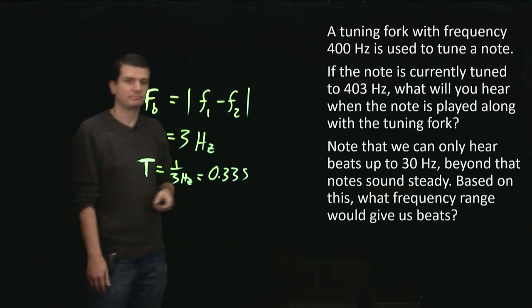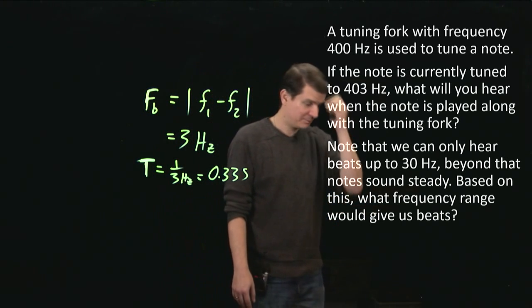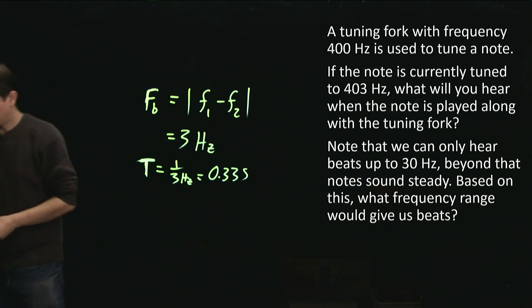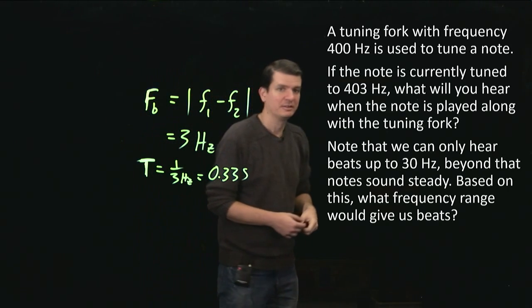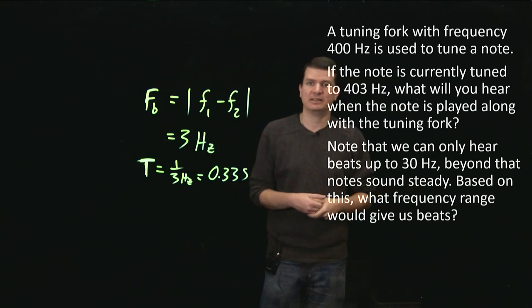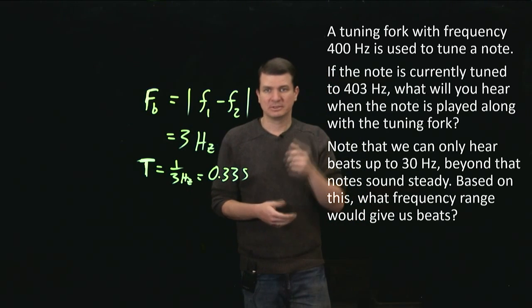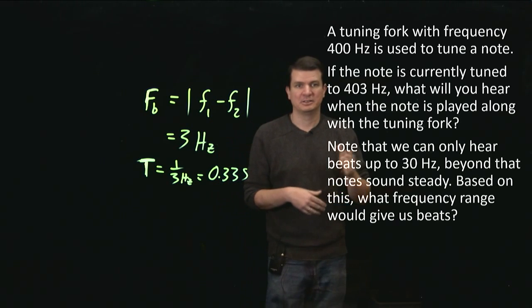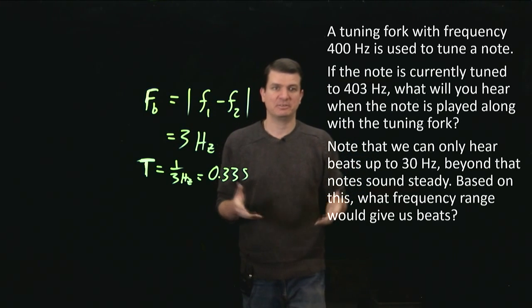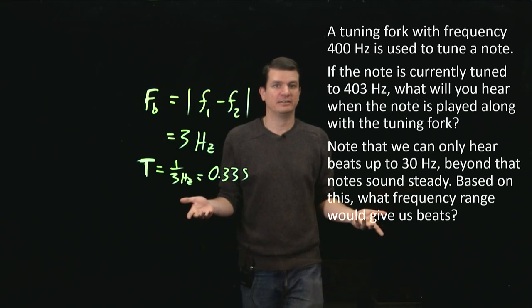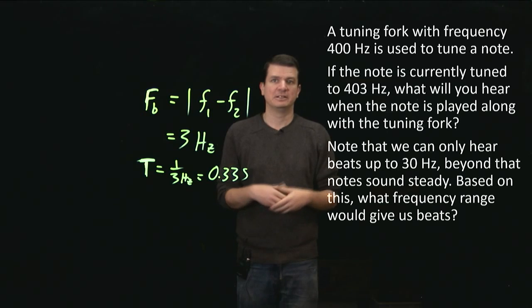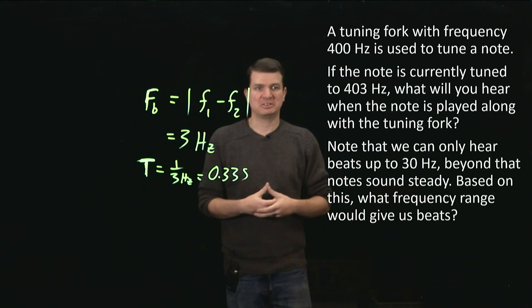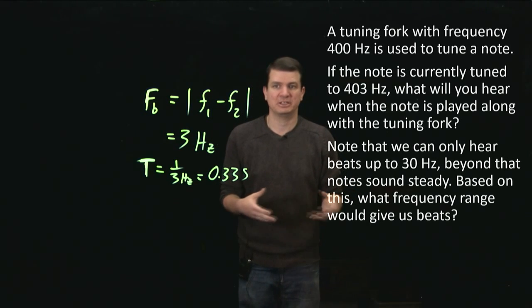So let's think about this. The whole idea is you want to be able to hear the beat and use that to tune the note. This only works as long as things are somewhat close together. The human ear can only hear and distinguish things as being pulses up to a frequency of 30 hertz. Beyond that, the sound starts to sound nice and uniform. That's why the 400 hertz note played by itself would actually sound like a nice uniform note. So if we can only hear up to 30 hertz, the question is what frequency range would give us beats?